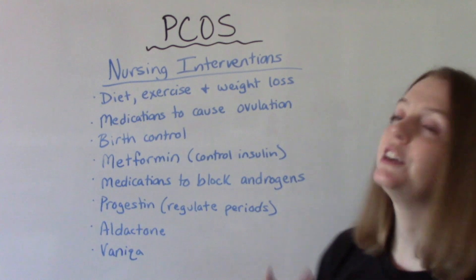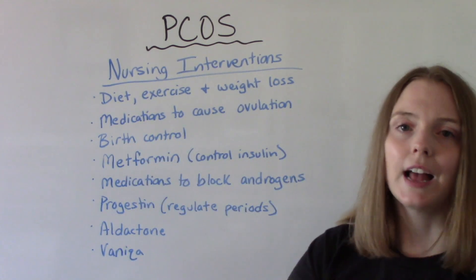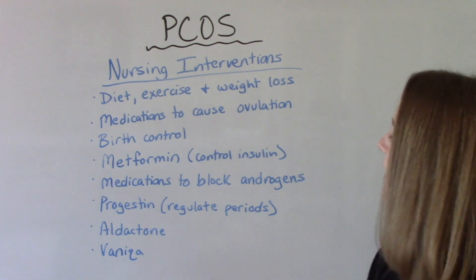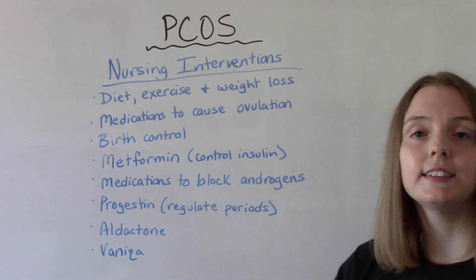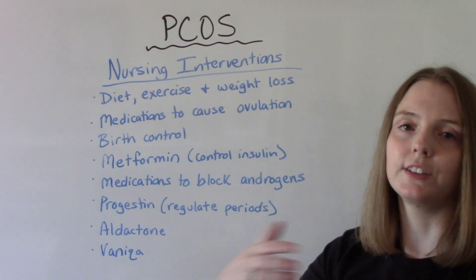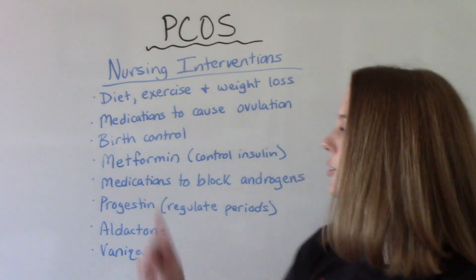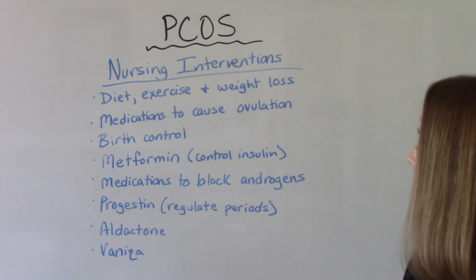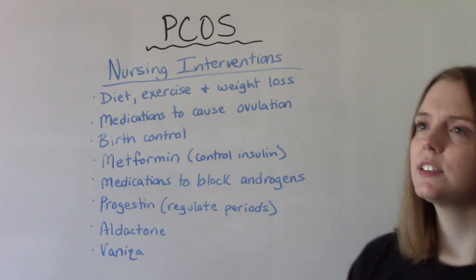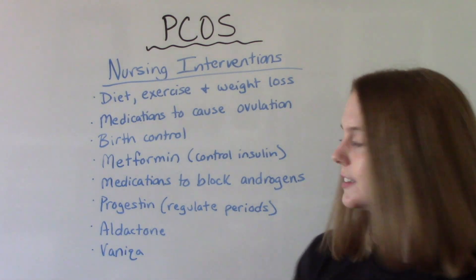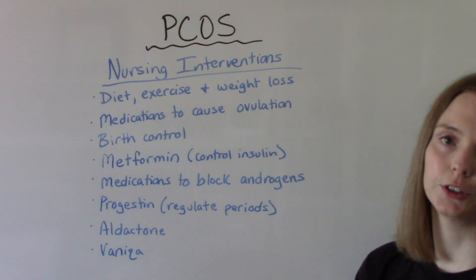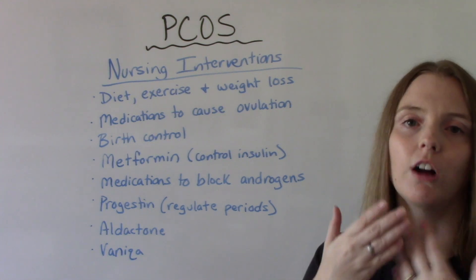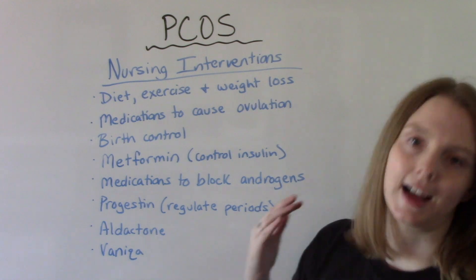If the patient wants to have a child, medications to cause ovulation are used. Birth control can help with irregular periods. Metformin — which you'll recognize as a diabetes medication — helps control insulin, and for some women, once insulin is under control, ovulation goes back to normal and regular periods return. Other medications include ones that block androgens, progestin to regulate the period, Aldactone for symptoms like acne, and Vaniqa cream for excessive hair growth. For excessive facial hair, electrolysis is another option the nurse can recommend.